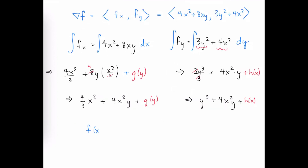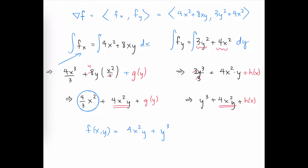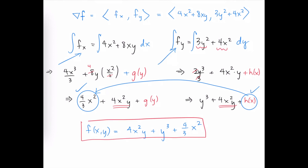Now let's put these two criteria together to come up with a potential function for the vector field. Notice that both criteria contain the term 4x squared y, so that must be part of the potential function. From the first criteria we also pick up 4x cubed over 3, and from the second we pick up the y cubed term entirely in terms of y. Additionally, the 4 thirds x cubed term is held constant when differentiating with respect to y, satisfying the second criteria. So this gives us our complete potential function for that conservative vector field.